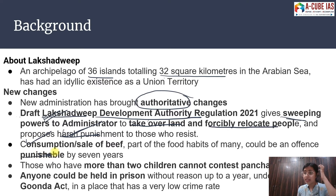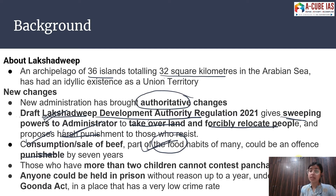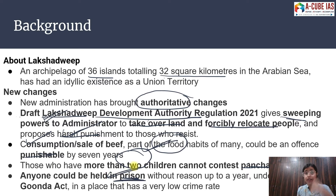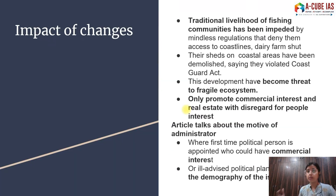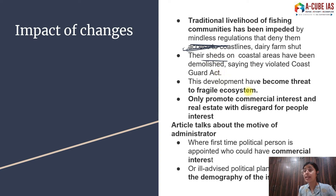The regulation also includes that consumption of beef will be a punishable offense, which goes against the food habits of the tribal people who consume beef. It also imposes a regulation that if someone has more than two children, they may not be able to contest a panchayat election. Anyone can be detained without reason — these are very draconian orders. The article declares these are authoritative changes that will impact the traditional livelihood of people.